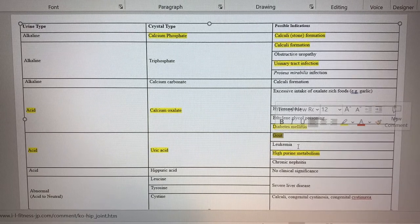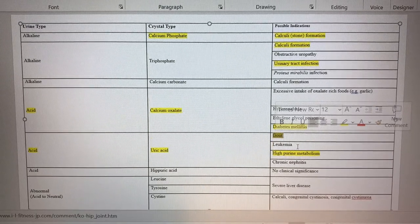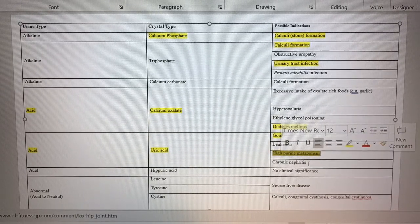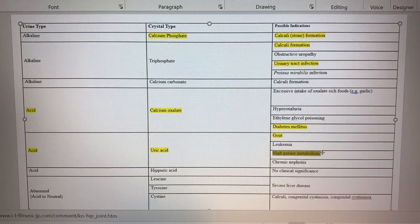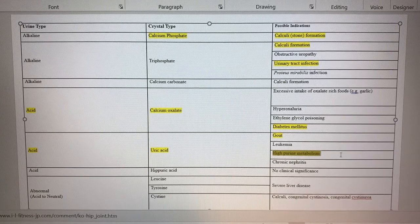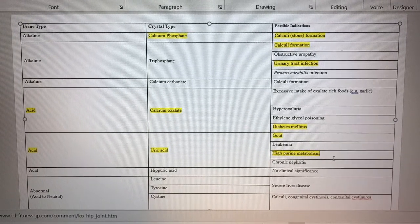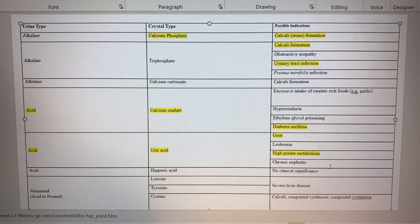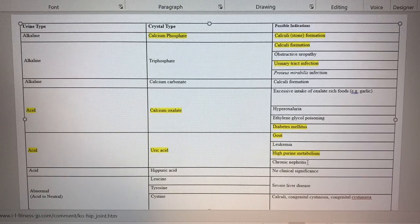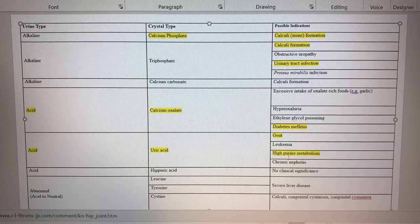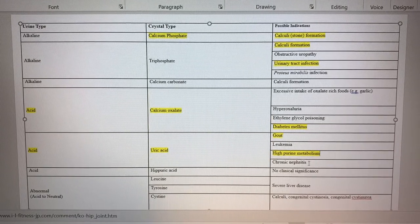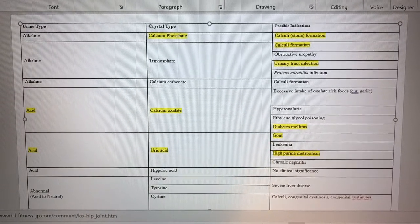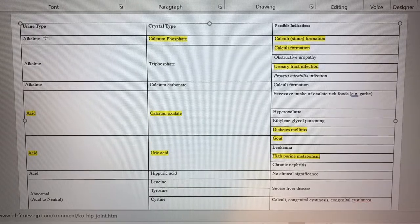Another type of acidic crystal is uric acid. This one is very common. We could see this in a gout patient. Remember, gout is usually in the great toe joint. Leukemia, high purine metabolism - purine-rich foods like beer. Beer is a very high purine content food. And chronic nephritis, which has different etiologies. Just to note where the staghorn is - the alkaline one.